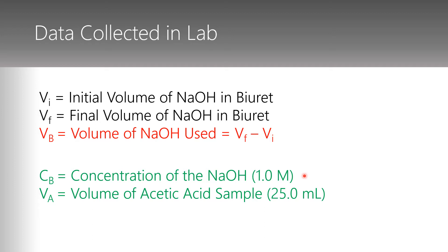We also need to know the volume of acetic acid that we're going to test, just like we had to know the volume of the water we tested in the water hardness laboratory. The volume of each of our samples of acetic acid is 25.0 milliliters. The data you collect off the pictures are the volumes from the burets — an initial and a final volume — and we determine the amount of NaOH used by taking the final minus the initial.